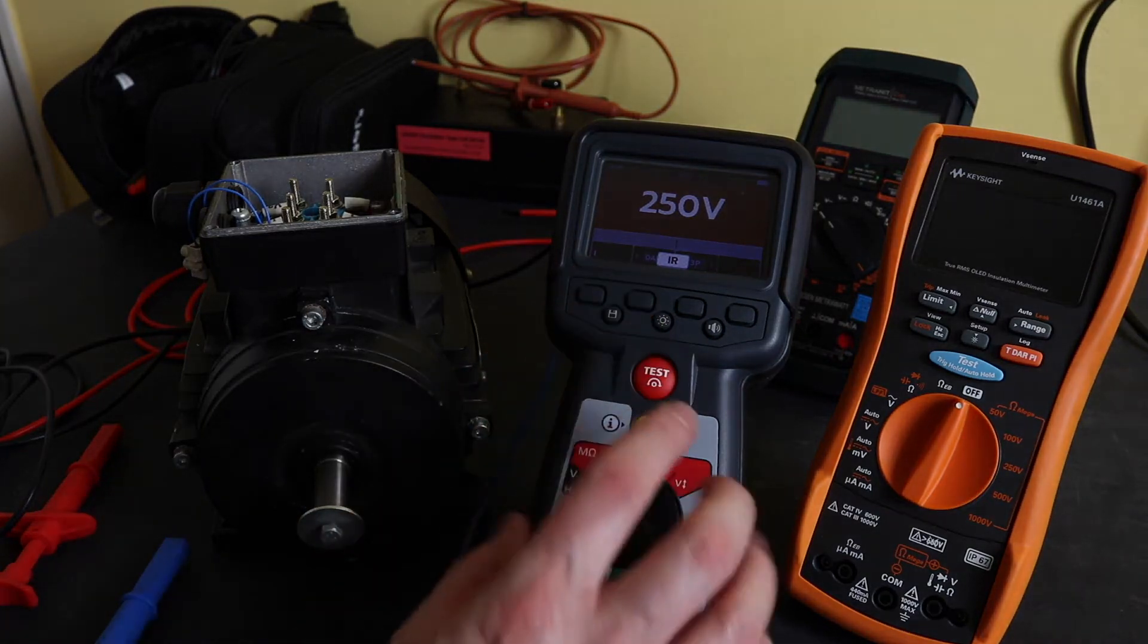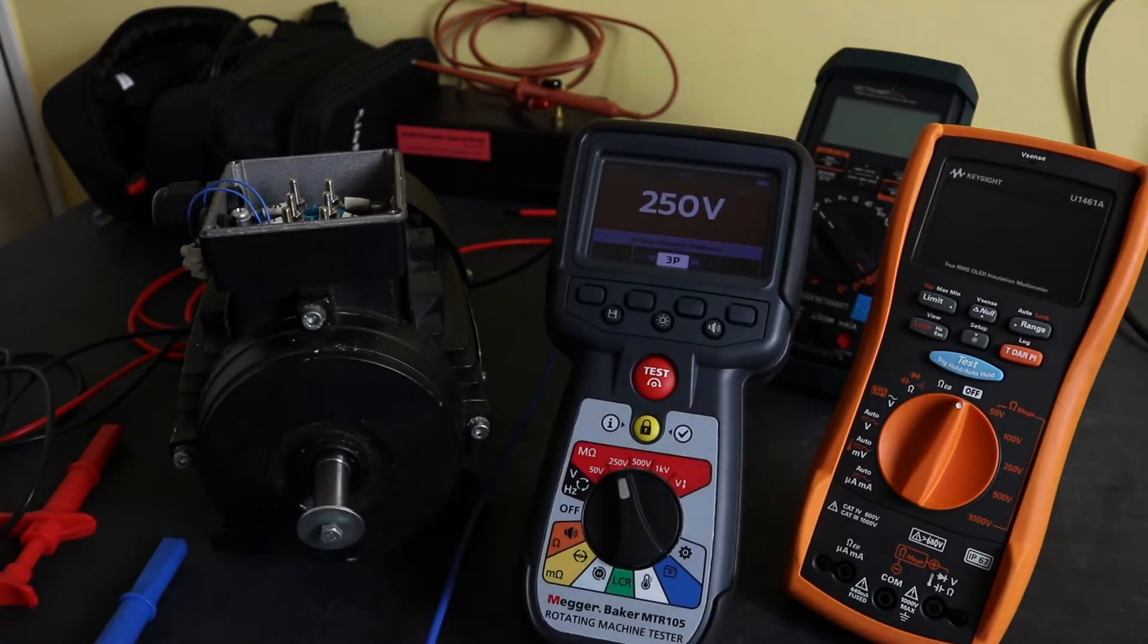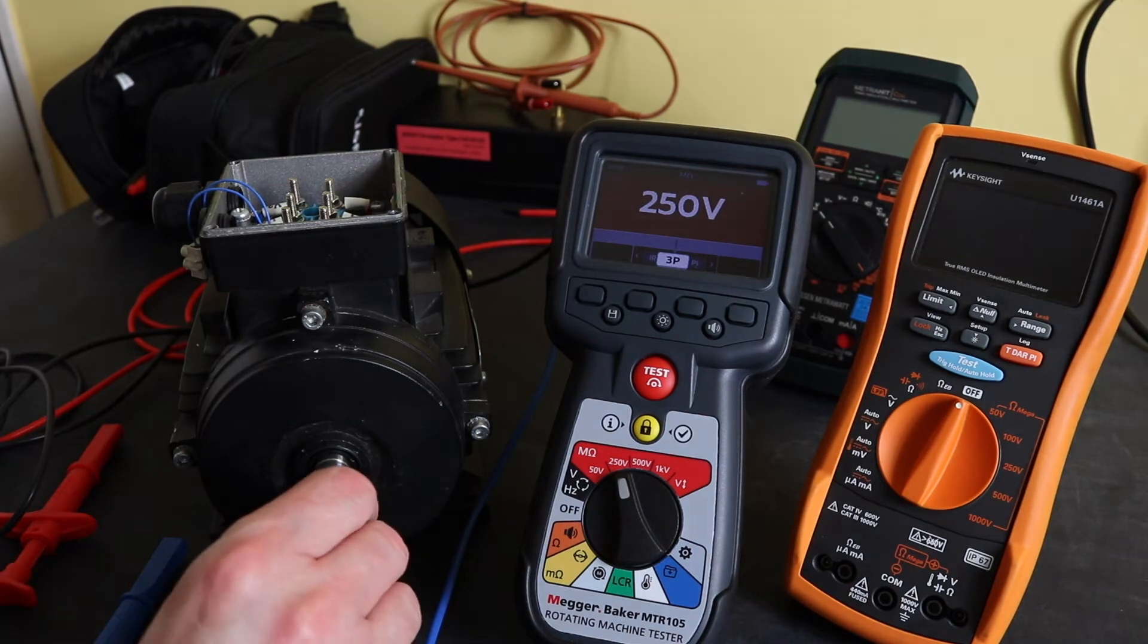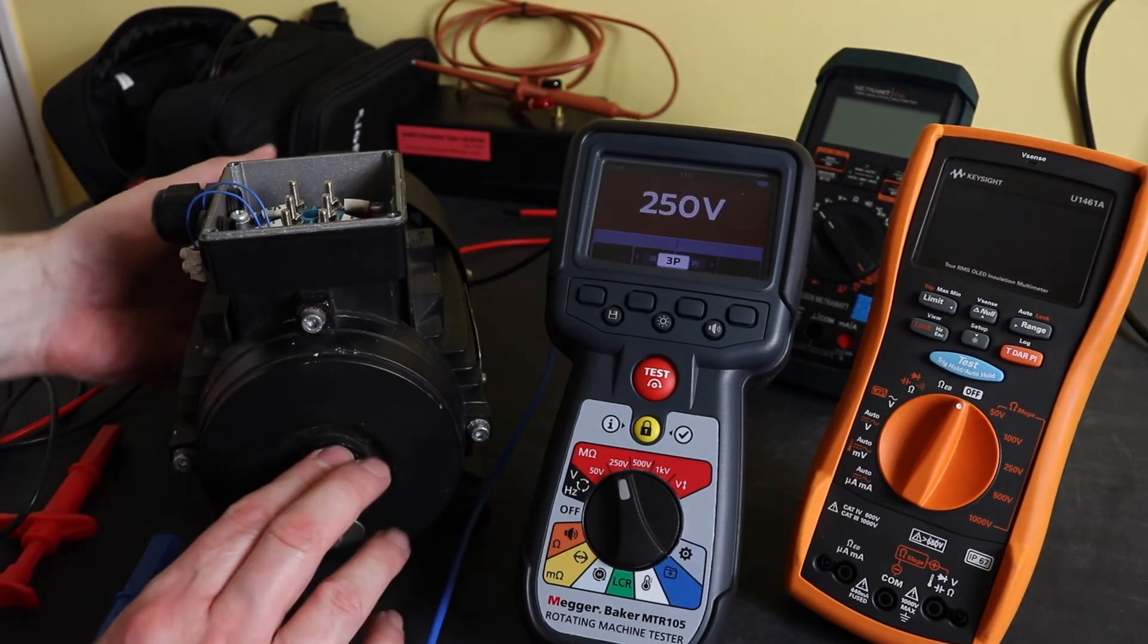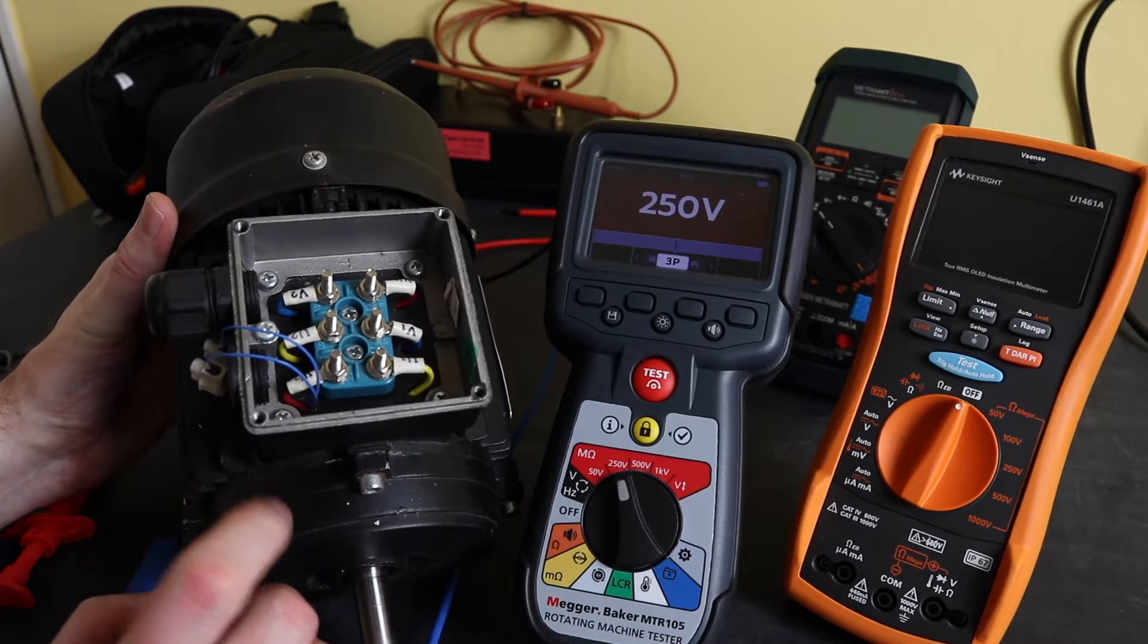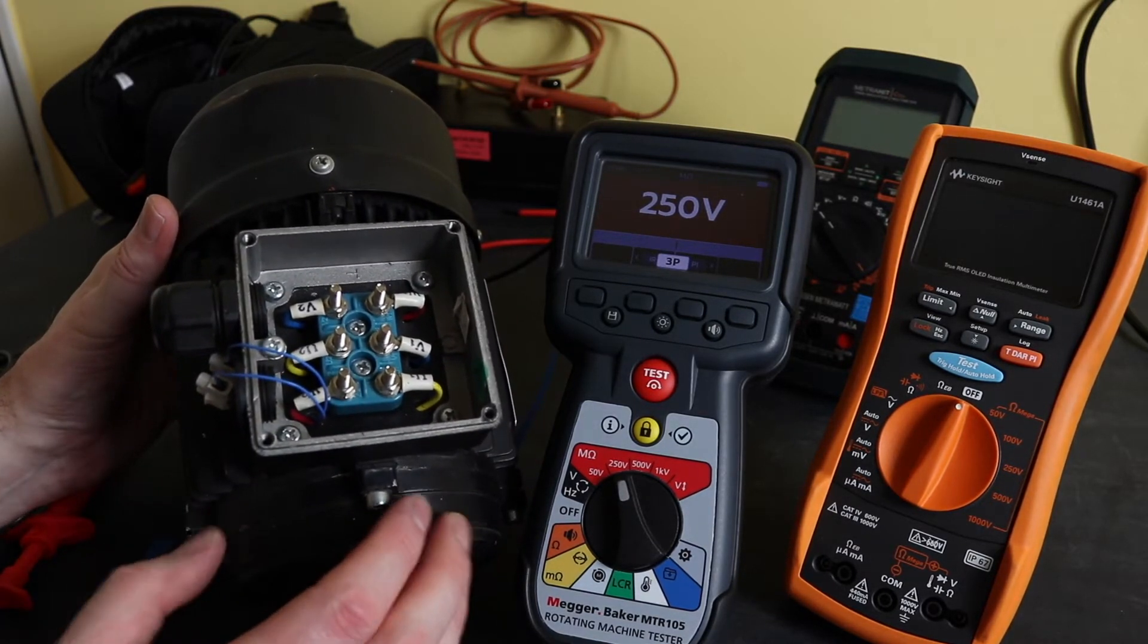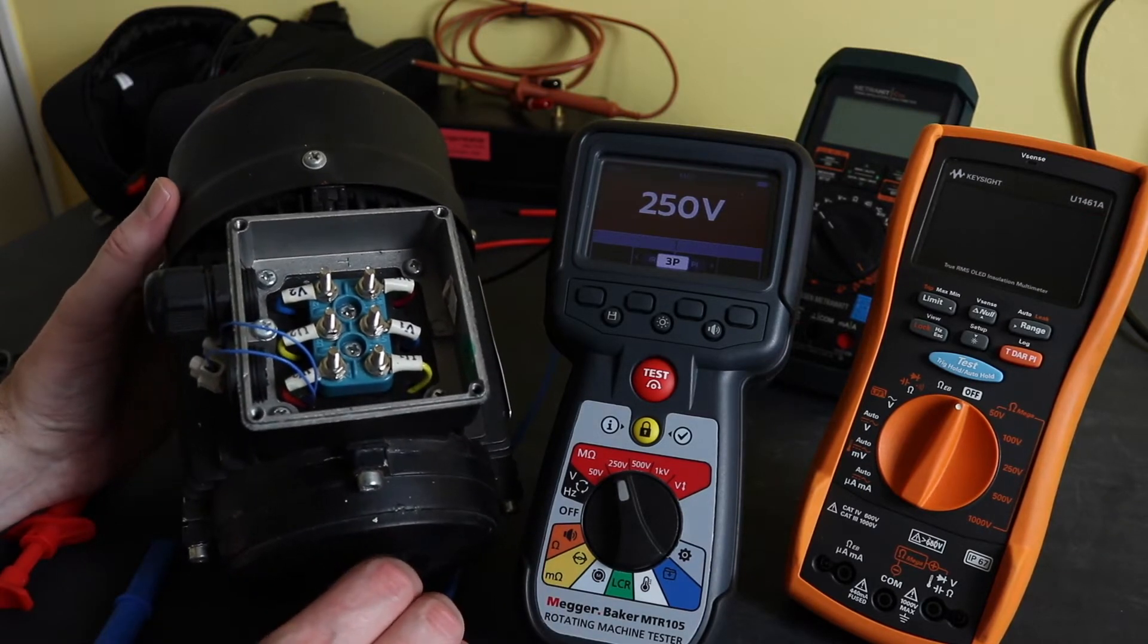It always defaults to a standard IR test. To get to the three-phase, you just press one of the selection buttons there. Now what I'm going to use is the little three-phase motor I have here to demonstrate this test. If I hook him up, you can see that I've actually removed the three links. So this is now an open winding configuration, which is the only time you'd use a three-phase insulation test function.